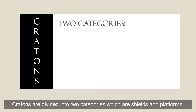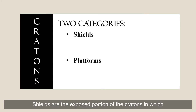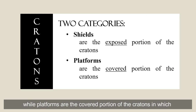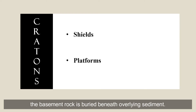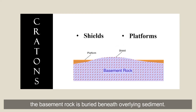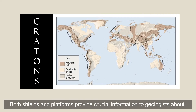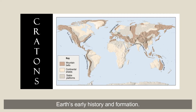Cratons are divided into two categories: shields and platforms. Shields are the exposed portion of the cratons in which the ancient basement rocks outcrop into the atmosphere, while platforms are the covered portion of the cratons in which the basement rock is buried beneath overlying sediment. Both shields and platforms provide crucial information to geologists about early history and formations.